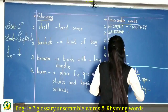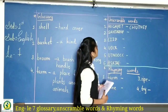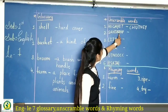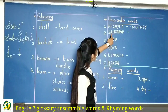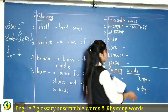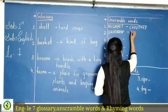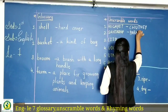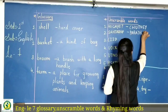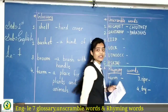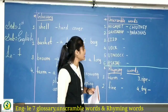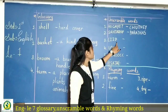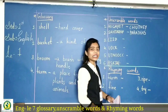Then yahan pe dekhiye kaun sa unscramble word banega — t-a-r-a-t-h-a-s means 'parathas'. Kya banega? P-A-R-A-T-H-A-S, parathas. Then yahan pe l-i-i-d matlab 'idli' banega — I-D-L-I, idli.